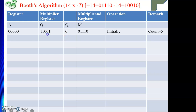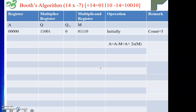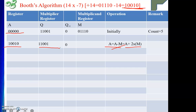We begin the algorithm by examining Q0 and Q−1. We look from Q−1 to Q0: we see 0 and 1. Moving from 0 to 1 means we are going toward the negative side, so we perform a subtraction. Subtraction is equivalent to adding the 2's complement of the multiplicand, which is −14 = 10010. We add this to A (currently all zeros), giving A = 10010. Q and Q−1 are copied as before.